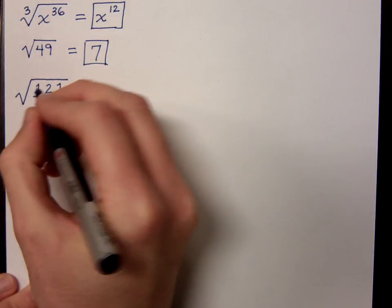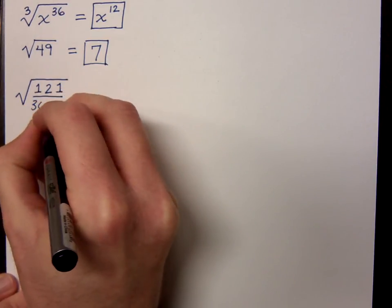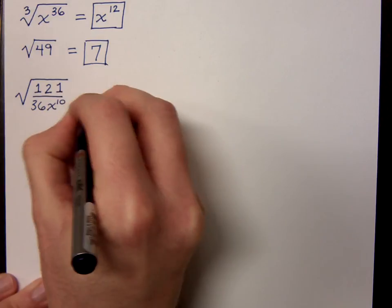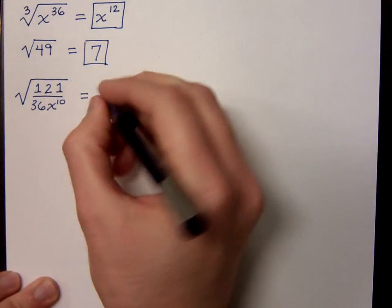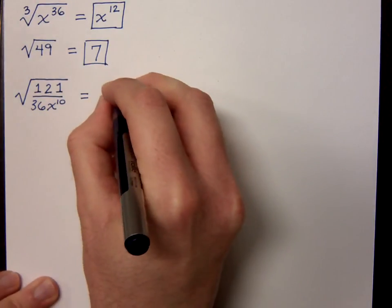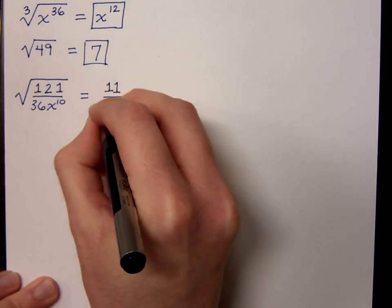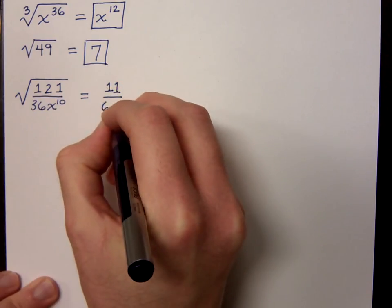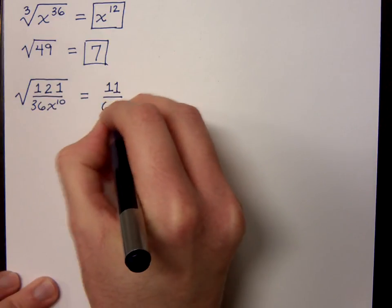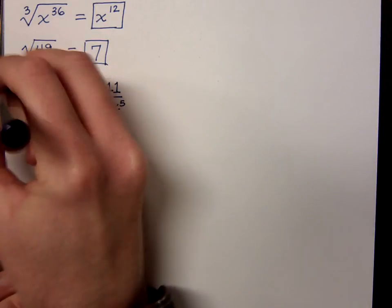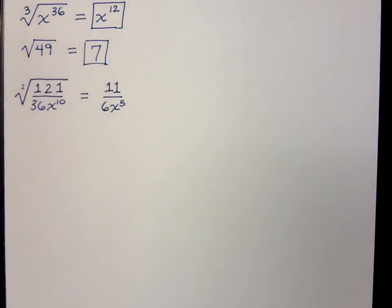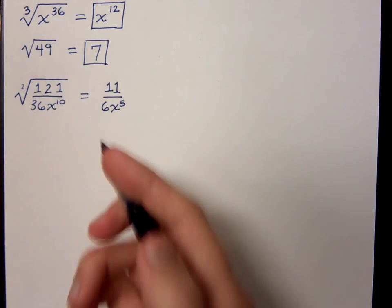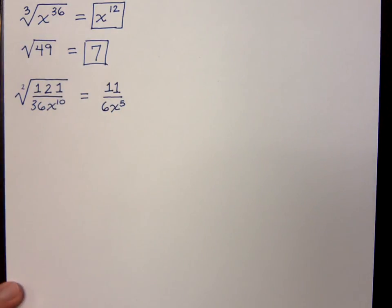If I had the square root of 121 over 36x to the 10th, you had a problem very much like this in your test as well. What would you do? 11 over 6. The square root of 121 is 11. The square root of 36 is 6. But now that you've got exponents, you're going to cut it by the index, so that's going to be x to the 5th. Right? Remember, this is understood to have an index of 2. Not that we write that. But when it comes to dividing the exponents by the index, it's useful to write it there.